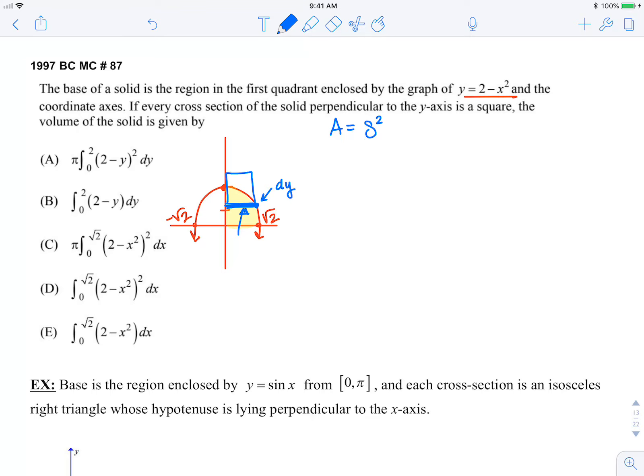I need my function to be in terms of y, since my cross-sections are perpendicular to the y-axis. So y equals 2 minus x squared, or x squared equals 2 minus y. x equals positive or negative square root 2 minus y. But since we're focused on the first quadrant, we're only going to take the positive square root. So in this instance, s equals square root 2 minus y.